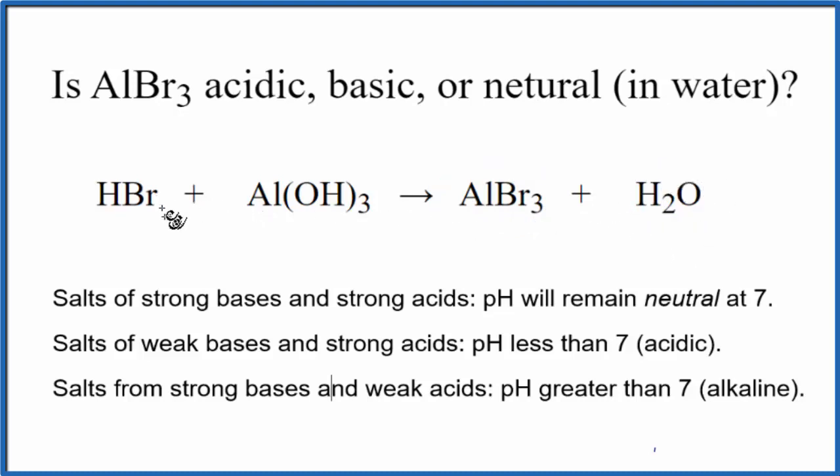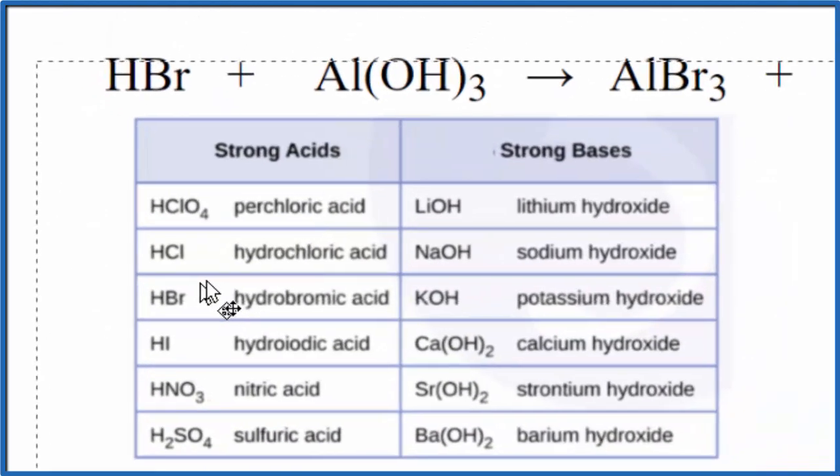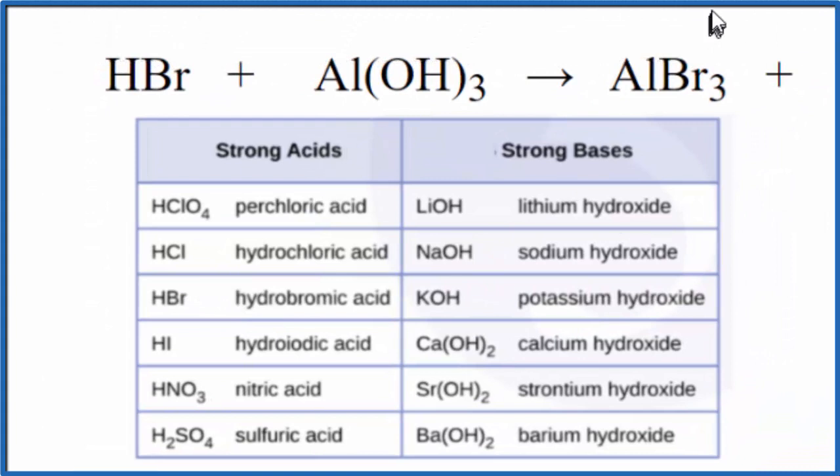Next, we need to figure out the strength of the acid and the base, so we can use these rules here to figure out whether AlBr3 is acidic, basic, or neutral. So this is a really good list to remember here of the strong acids and strong bases.